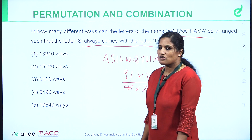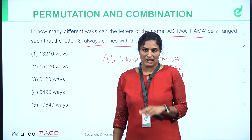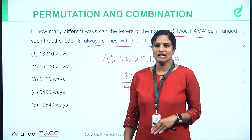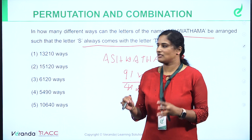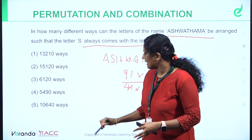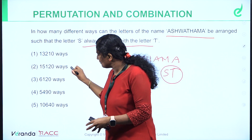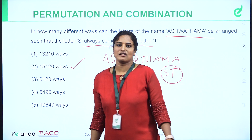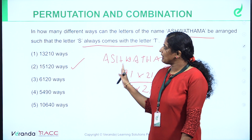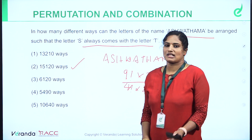So the formula is: 9 factorial × 2 factorial, divided by 4 factorial × 2 factorial. The answer is 15120. Then we discuss the next question — one combination, one permutation, and the last question.